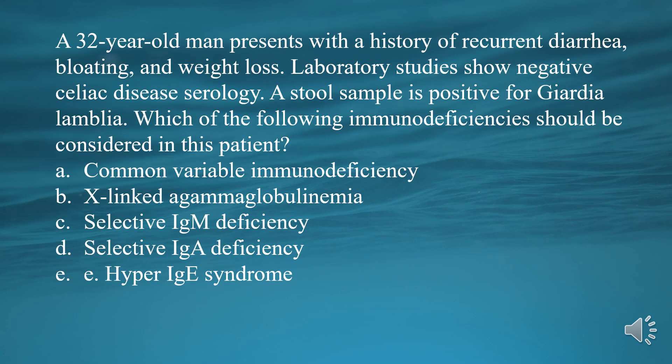A 32-year-old man presents with a history of recurrent diarrhea, bloating, and weight loss. Laboratory studies show negative celiac disease serology. A stool sample is positive for Giardia lamblia. Which of the following immunodeficiencies should be considered in this patient?